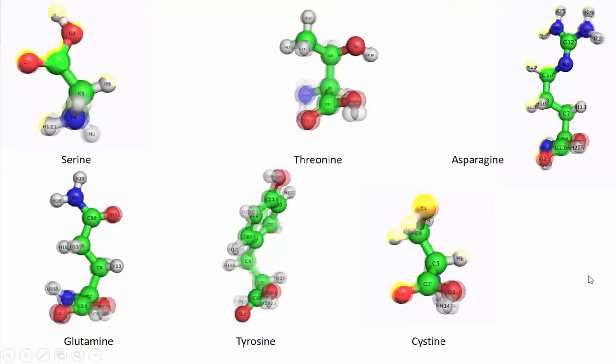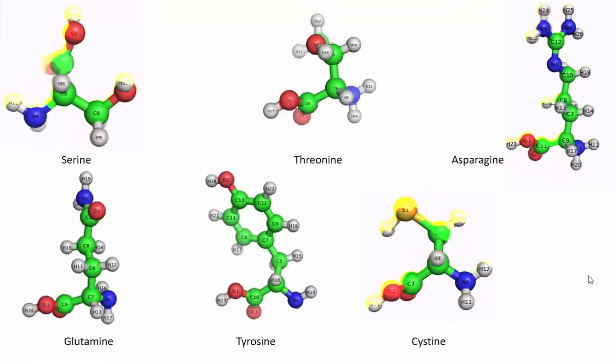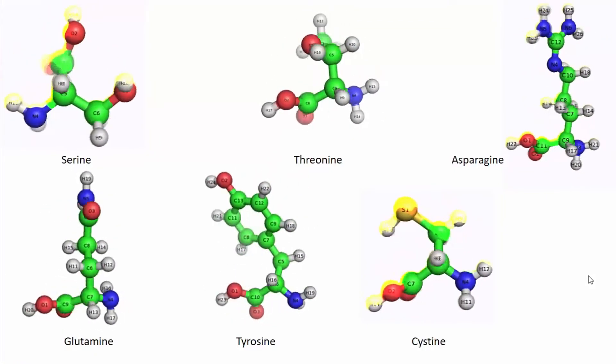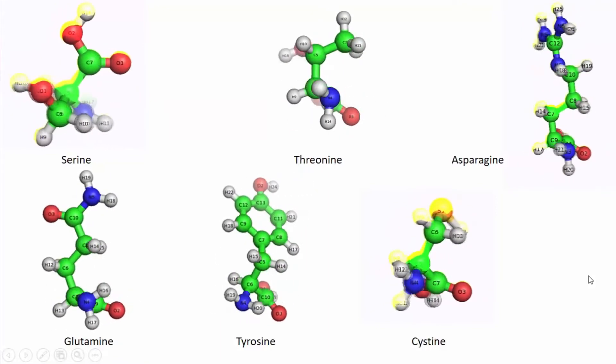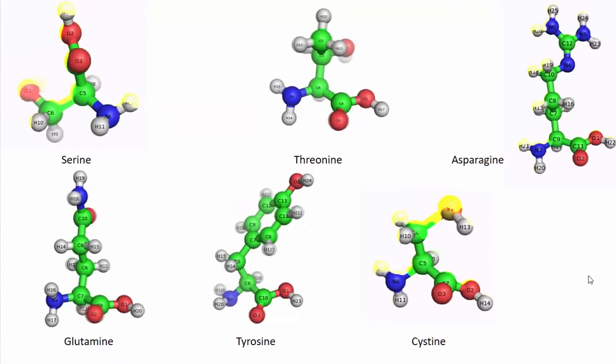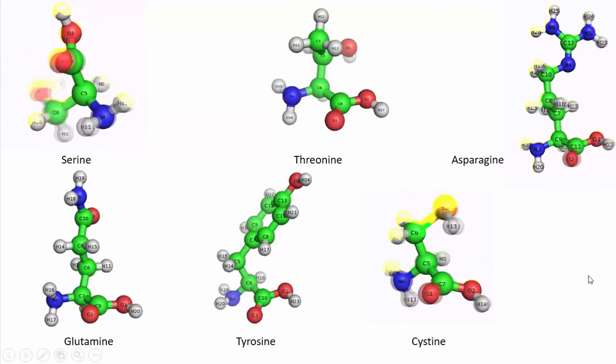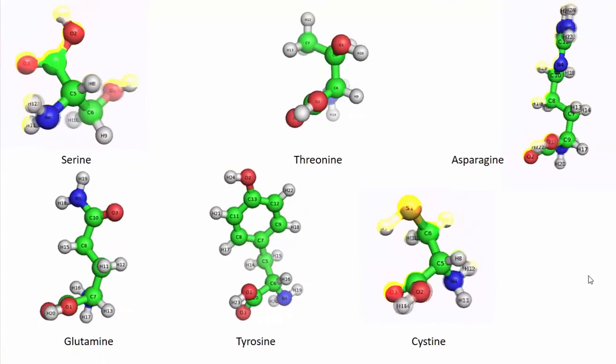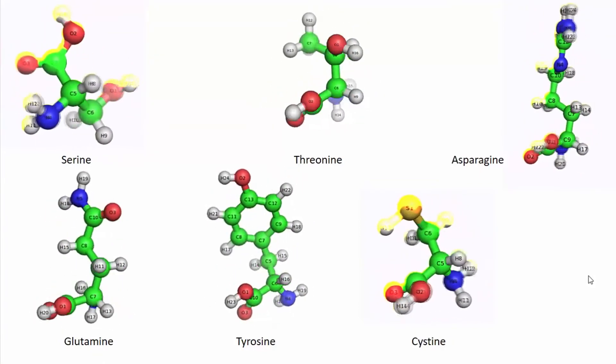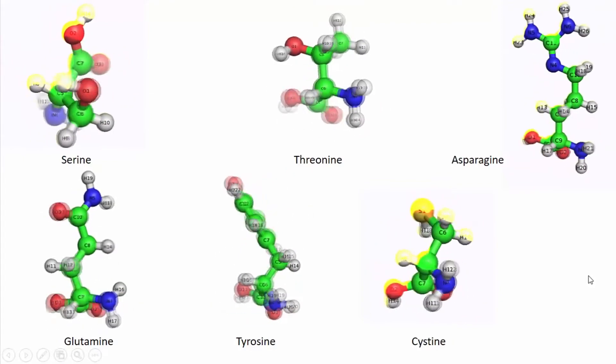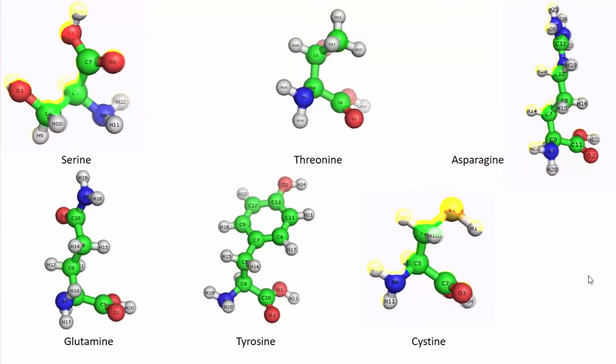Six amino acids are classified as having uncharged polar side chains. Serine and threonine bear hydroxyl side chains of different sizes, as you can see here. Asparagine and glutamine have amide-bearing side chains of different sizes. Tyrosine has a phenolic group. Cysteine has a thiol group that is unique among the 20 standard amino acids, because it often forms a disulfide bond to another cysteine residue. This disulfide bond has great importance in protein structure — it can join separated polypeptide chains or cross-link two cysteines in the same chain.